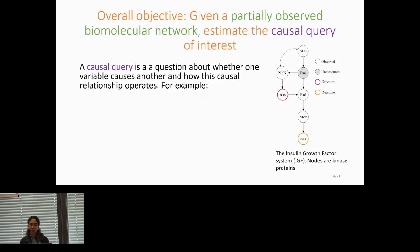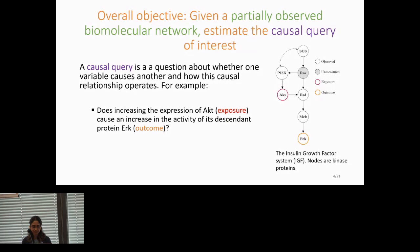A causal query is a question about whether one variable causes another, and if it does so, how this causal relationship operates. For example, in this network, we can ask, does increasing the expression level of AKT cause an increase in the activity level of its descendant protein ERK, which we refer to as outcome? Or we can ask, what is the effect of receiving a specific drug on a specific patient? So these are all types of causal query questions.